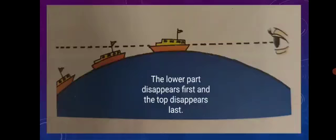If you have seen a ship sailing away, you will notice that the ship slowly goes out of our sight. The lower part disappears first and the top disappears last. This is because a ship is sailing on a curved surface.